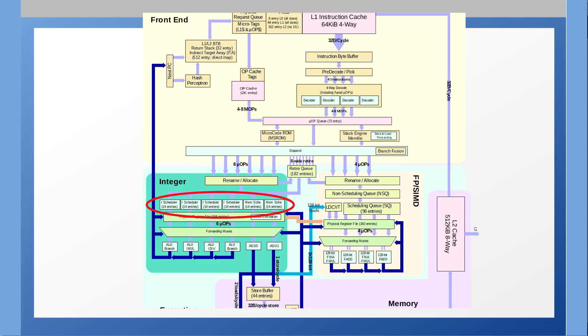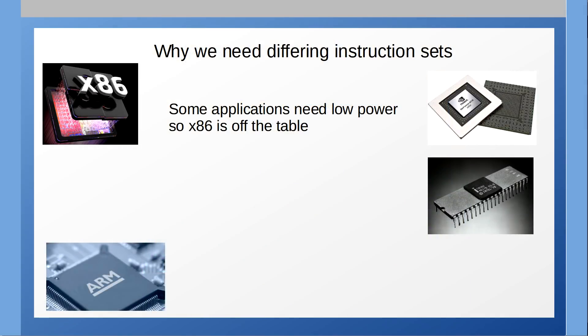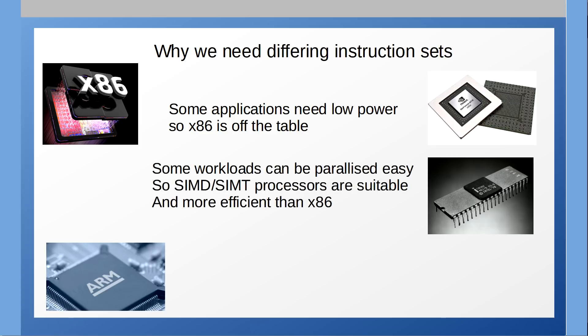These limitations all make the x86 instruction set incapable of being implemented as a single universal instruction set. So now we know about the limitations imposed by some instruction sets we should be able to see why we can't just have all of the processors using a single instruction set and hopefully you can start to understand why some processors are designed the way that they are with the instruction sets that they have.